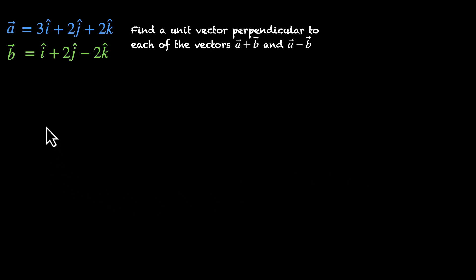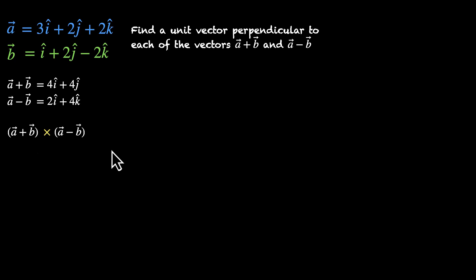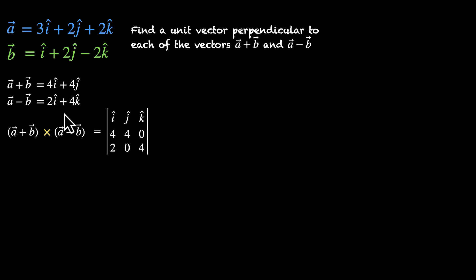Let's find the sum and difference first. a plus b is 4i-cap plus 4j-cap — the k components cancel out. a minus b is 2i-cap plus 4k-cap — the j components cancel out. Now let's take the cross product (a plus b) cross (a minus b): that's the determinant of i, j, k with 4, 4, 0 in the second row. We need to be careful — the j component of a minus b is 0, so we have 2, 0, 4 in the third row.